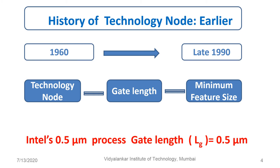Looking at the history of the technology node: when MOSFET production started in 1960 through to the late 1990s — more than 30 years — the technology node was referred to as the gate length of a transistor, which was also equal to the minimum feature size. So gate length and minimum feature size were referred to as the technology node. For example, Intel's 0.5 micrometer process had a gate length of 0.5 micrometer — whatever the technology node, the same was the gate length.